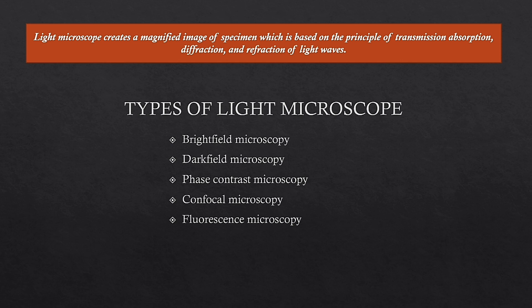There are five different types of light microscope, which will be covered in separate videos: bright field microscopy, dark field microscopy, phase contrast microscopy, confocal microscopy, and fluorescence microscopy. This topic is too large to cover in one video.